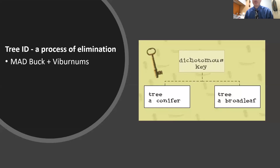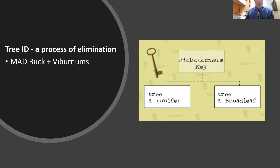A useful mnemonic: MAD BUCK plus viburnums covers all the oppositely arranged trees and shrubs you'll encounter most often. MAD stands for Maples, Ash, Dogwood. BUCK is for Buckeyes. And viburnums — formerly in Caprifoliaceae — are also opposite. These pretty much encompass most of the opposite-arranged native plants in our region.